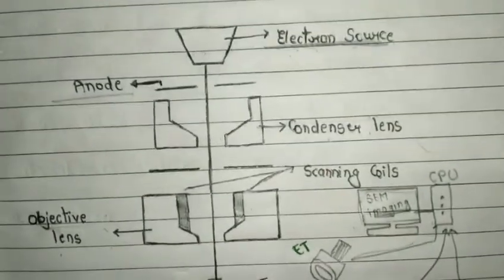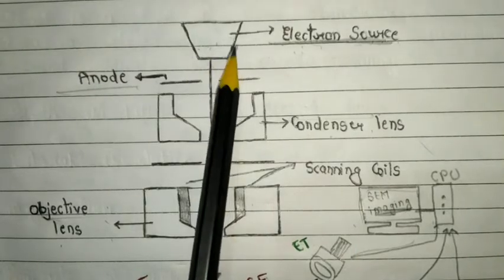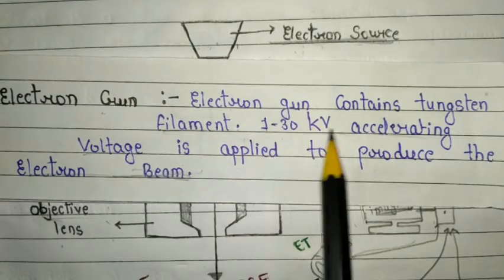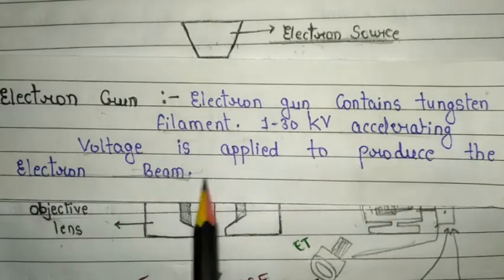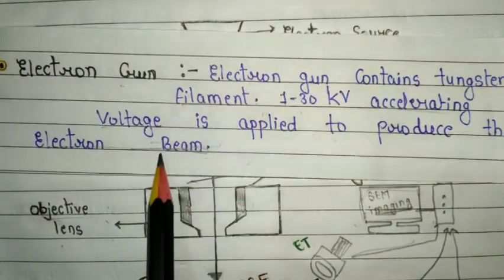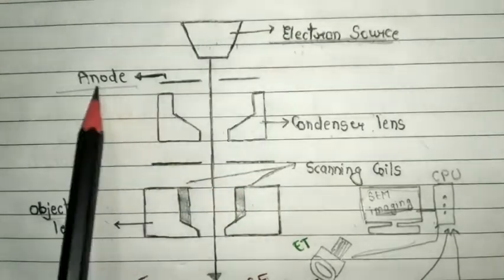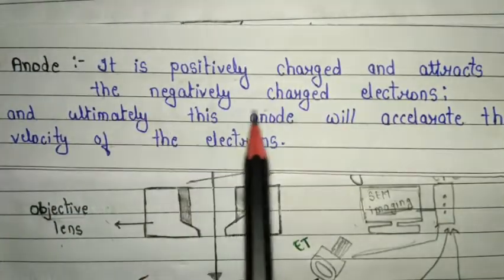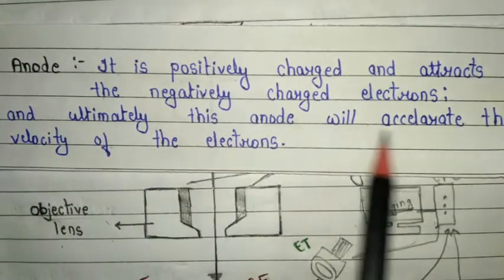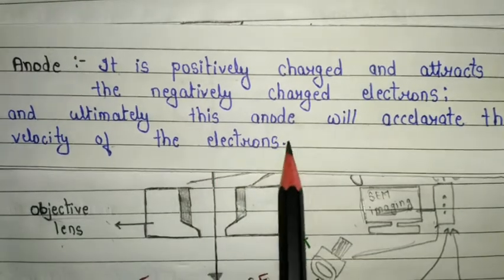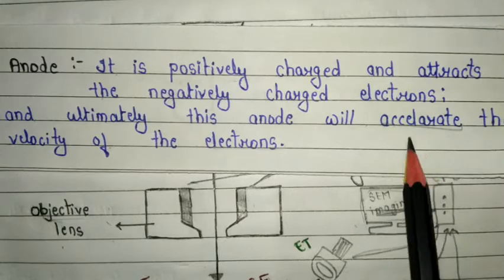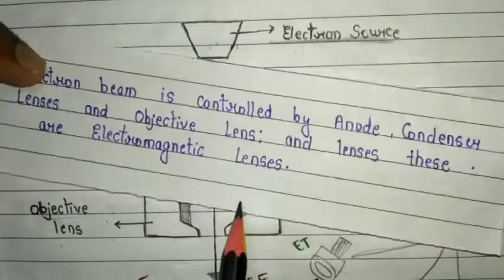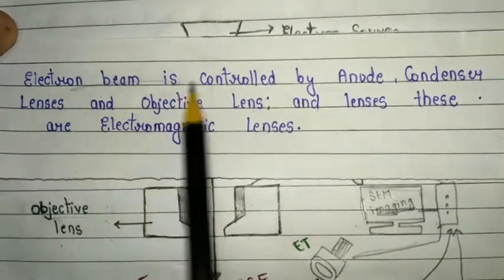For the electron source, we use an electron gun. The electron gun contains a tungsten filament, and an accelerating voltage of 1 to 30 kilovolts is applied to produce the electron beam. The electron gun is used to produce the electron beam. The anode is positively charged and attracts the negatively charged electrons, and ultimately accelerates the velocity of the electrons. The main work of the anode is to accelerate the electron beam. One very important point is that the electron beam is controlled by the anode.